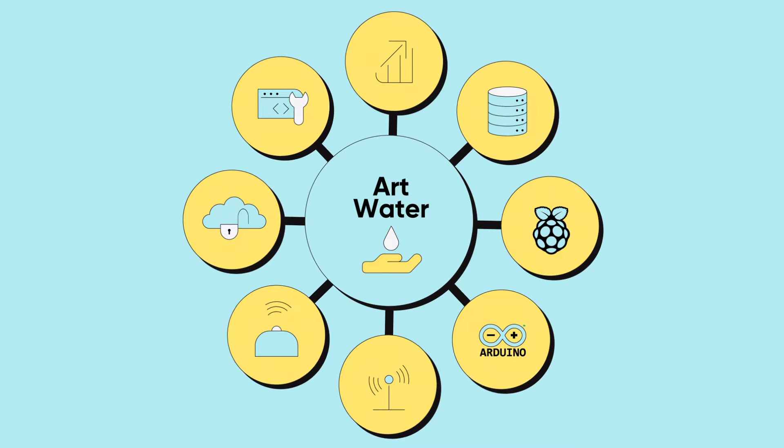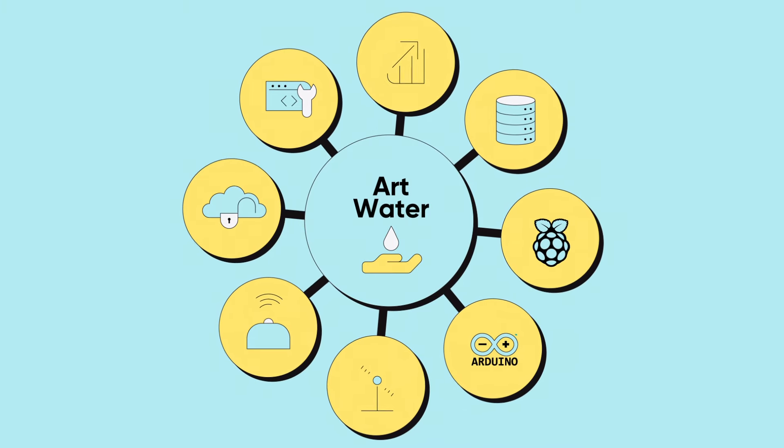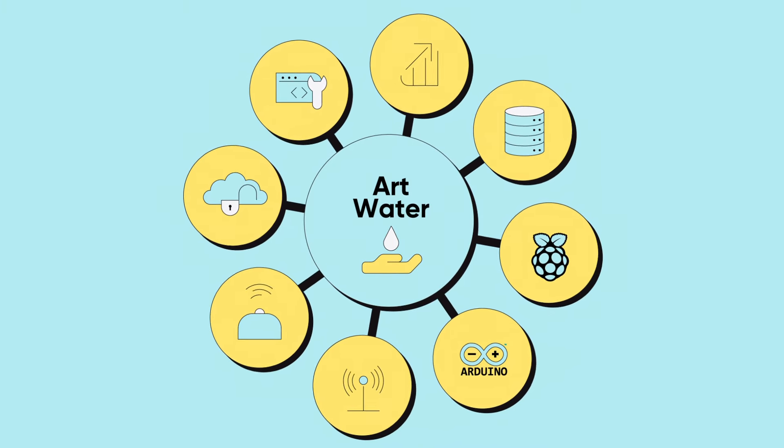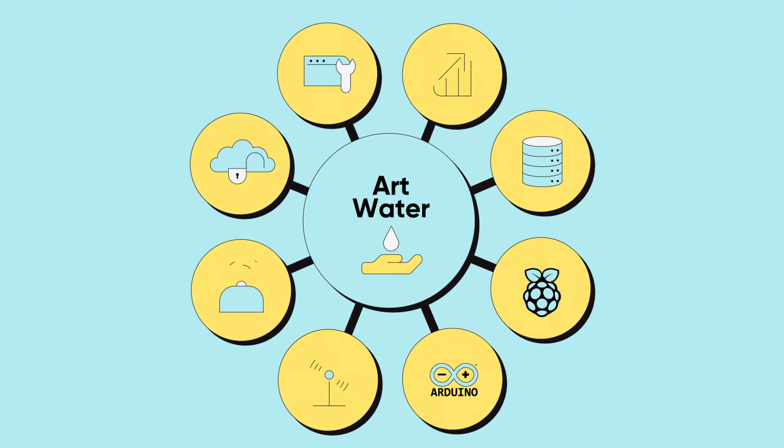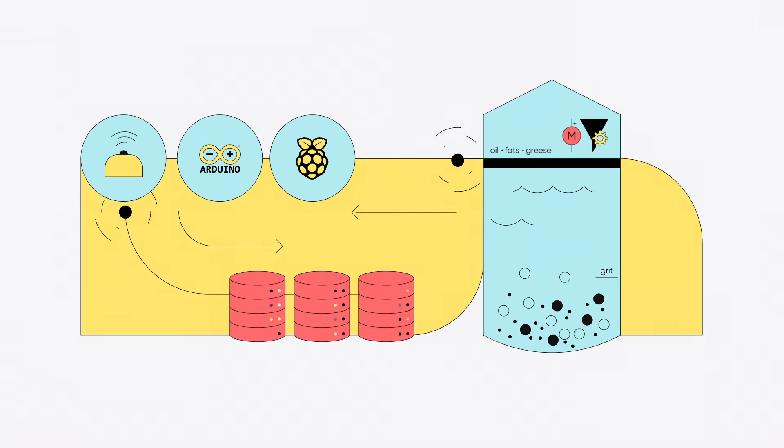ArtWater Project utilizes several ICT technologies like sensors, wireless networks, IoT devices, data-driven optimization software, development tools, and open platforms while collecting input from an oil and grease removal tank to form datasets.